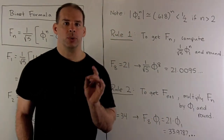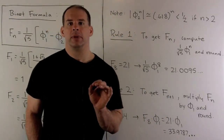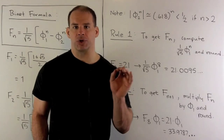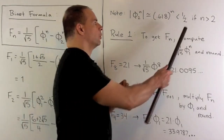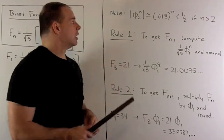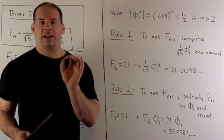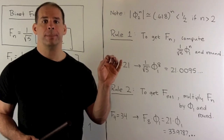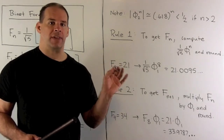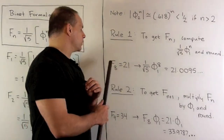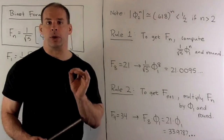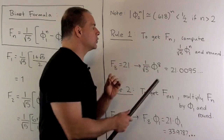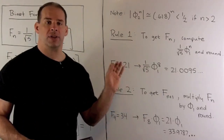For the higher numbers, we do a little bit of trickery. We note that phi2 is roughly minus 0.618. As we take powers of that, that number is going to get smaller and smaller. So when n is far out enough — say, bigger than 3 or 4 — we can ignore that term. The idea is: if you want F sub n, compute 1 over square root of 5 times phi1 raised to the nth power, and then just round. For example, F sub 8 is 21, and 1 over square root of 5 times phi1 to the 8th gives 21.0095 — pretty close.